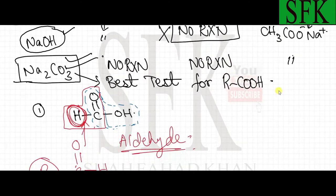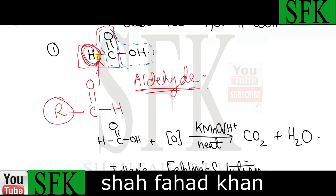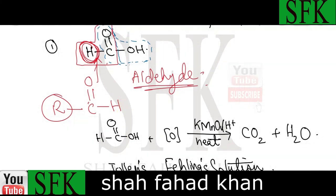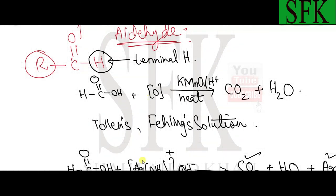Now let's talk about a few important carboxylic acids. The first is methanoic acid. If we look at the blue outline, it shows the carboxyl group — the COOH group. But the red outline shows an aldehyde group, which is a CHO group: a carbon double-bonded to oxygen with a terminal hydrogen. All aldehydes are reducing agents because they have a terminal hydrogen attached to the carbon atom, which they can donate.